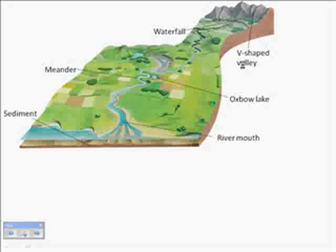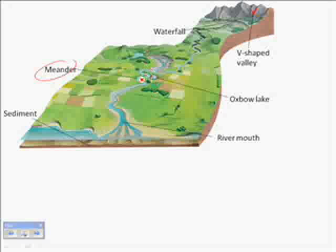Now let's talk about land formations. A river going through a mountain creates a V-shaped valley because the water runs really fast and cuts through like a knife — it's still a slow process, but it makes a very sharp cut. As the river flows down, in some places we get a meander. A meander forms because water going around the inside of a bend doesn't have as far to travel as water going around the outside, so the outside water flows faster and causes more erosion, moving the outer bank outward.